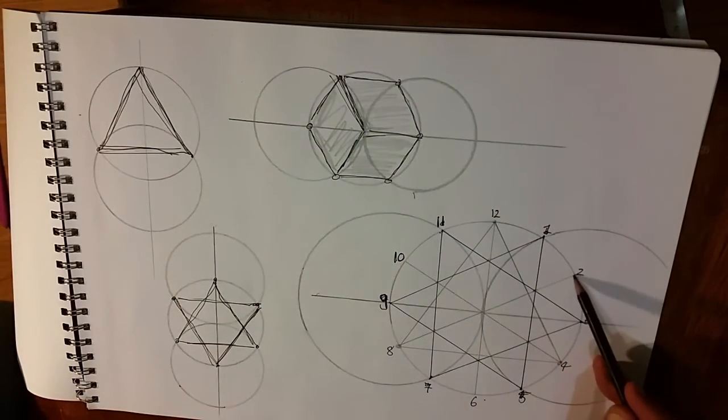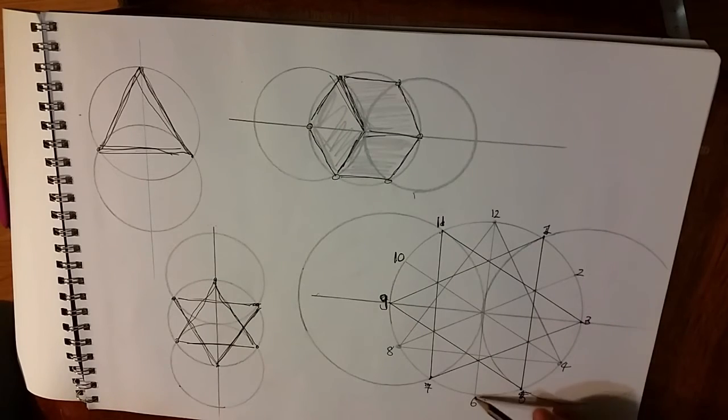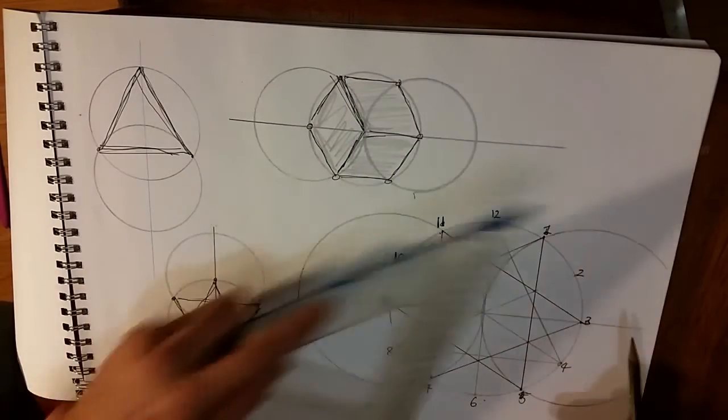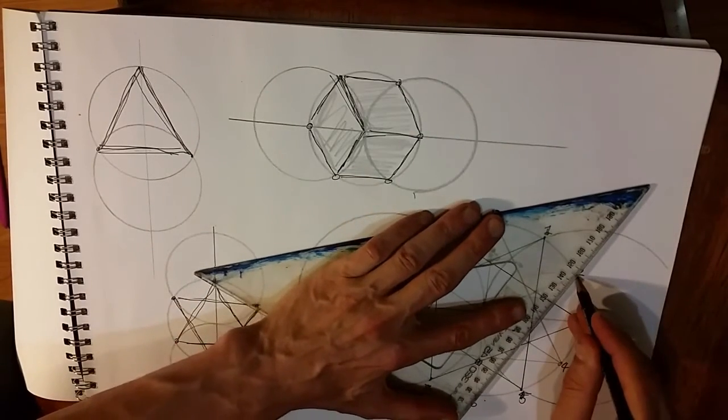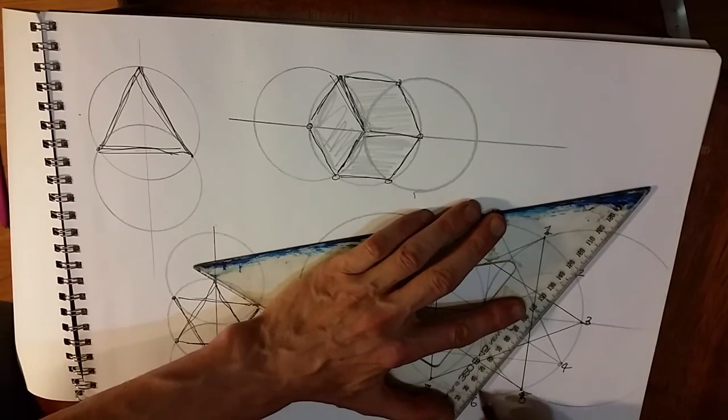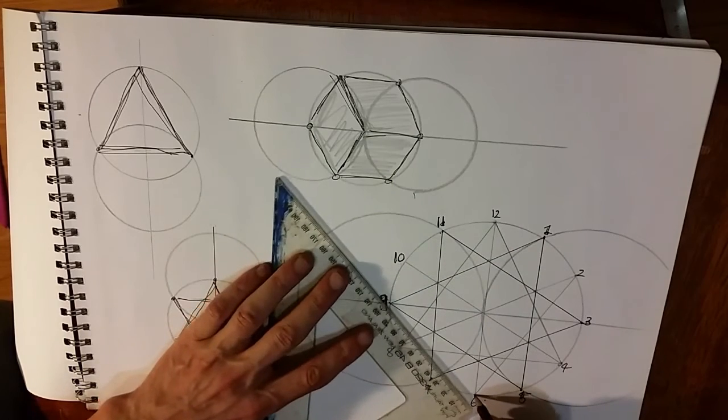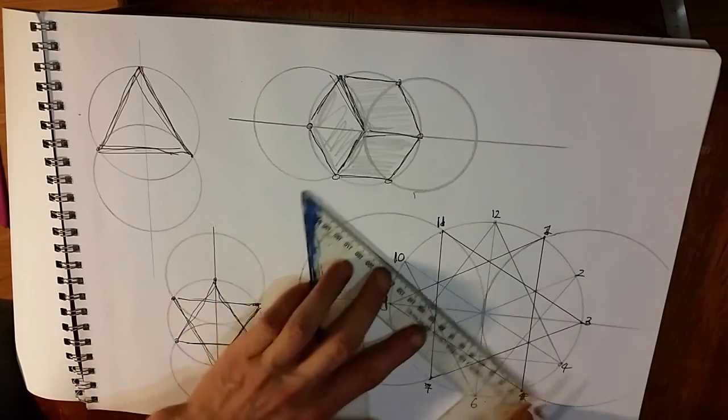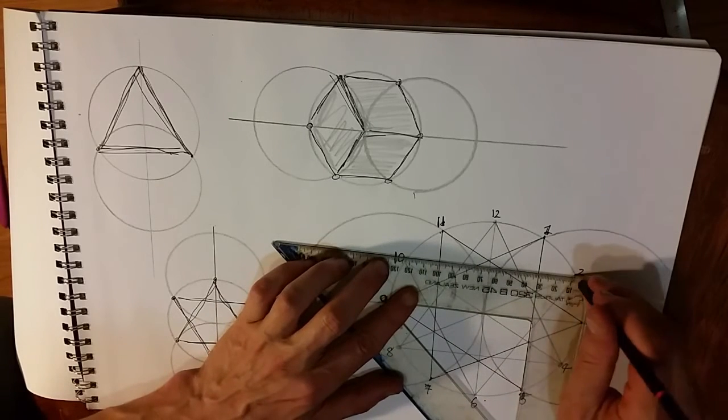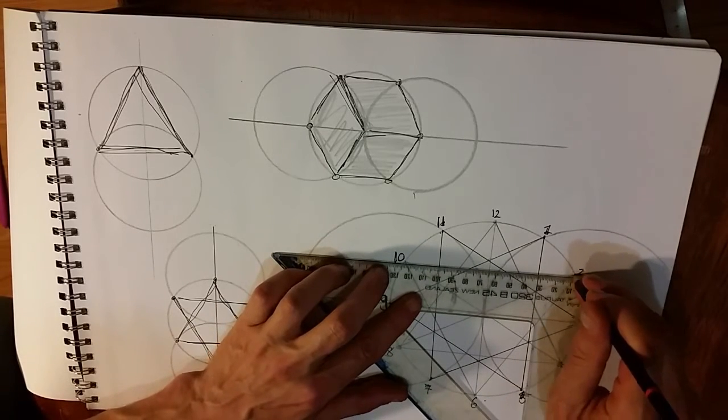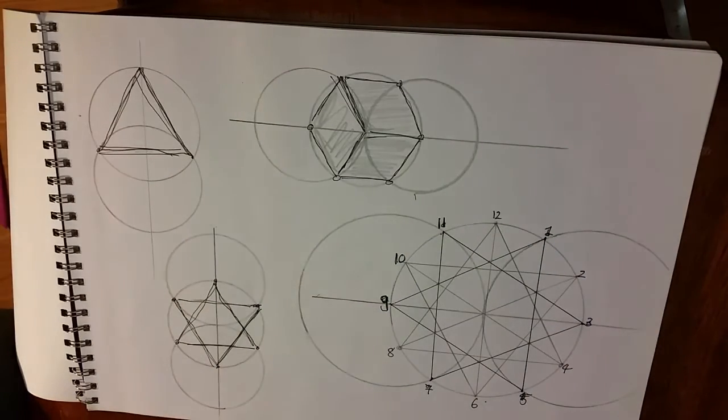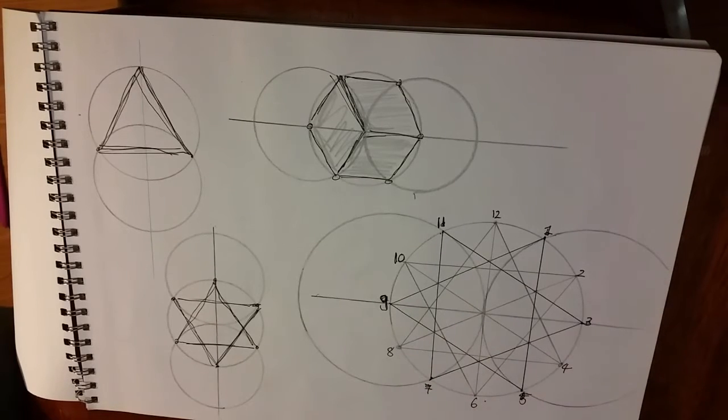And the same we begin with 2, add 4 we get 6, add 4 we get 10. So 2, 6, 10.